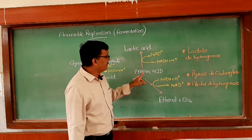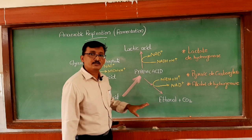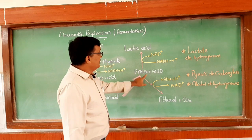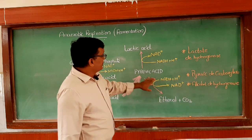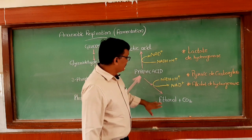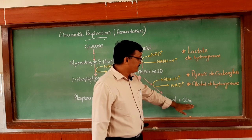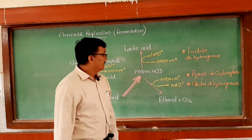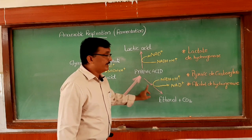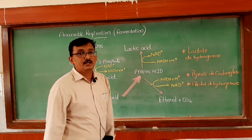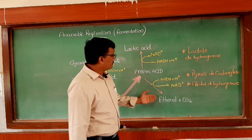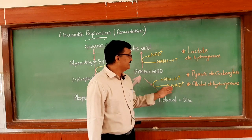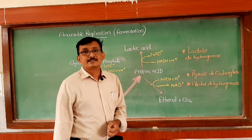Pyruvic acid undergoes again partial oxidation in the cytoplasm when there is no oxygen. Pyruvic acid converts into ethanol along with a carbon dioxide molecule. This is called alcoholic fermentation, where ethanol — that means ethyl alcohol — is produced. For this conversion, energy is also required: NADH+H+ enters and is released as NAD+.